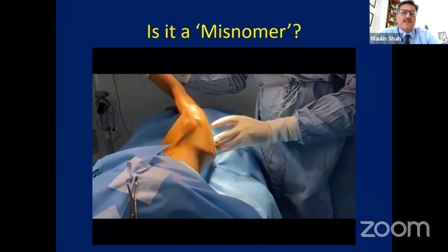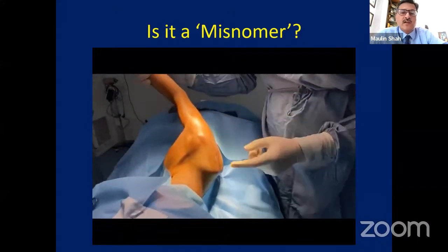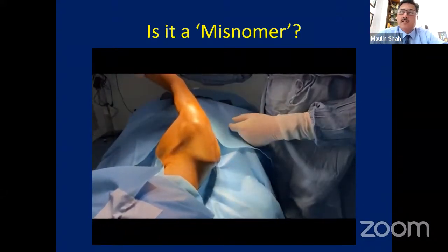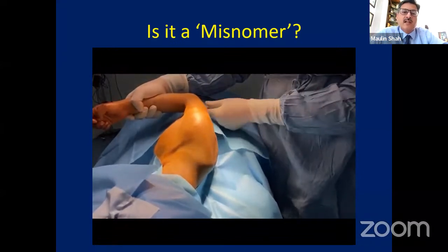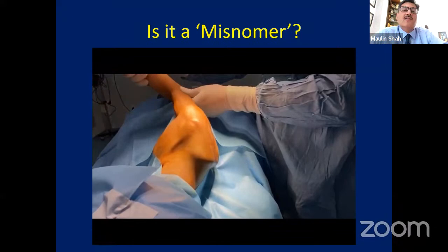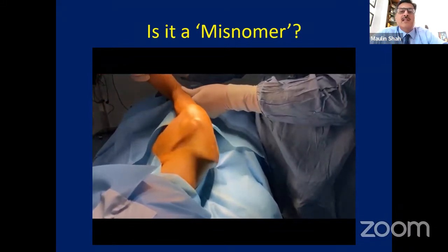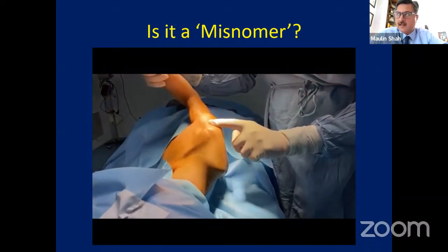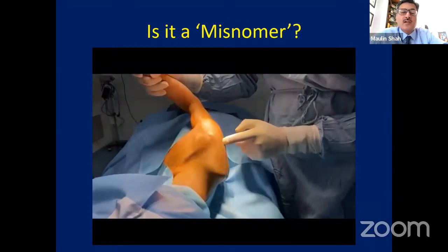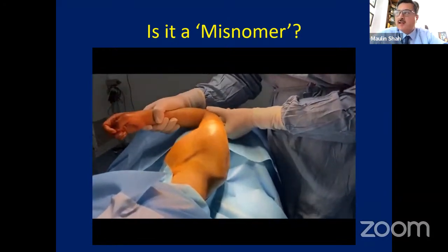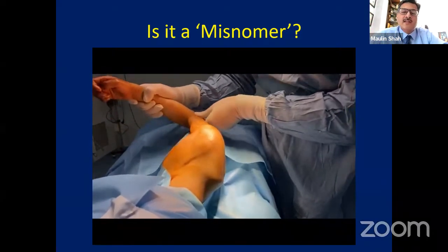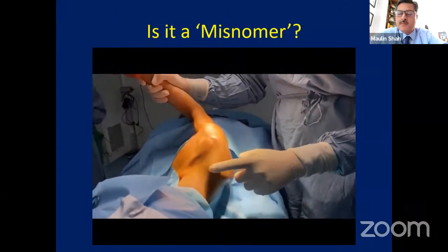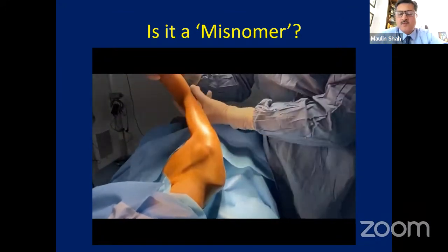This is an intraoperative picture: when we reduce the glenohumeral joint, the scapula becomes prominent. When we keep the arm adducted in internal rotation and the humeral head is dislocated, the scapula sits down. The moment you reduce it, the superoposterior dislocated humeral head reduces to the antero-inferior joint, stretching the antero-inferior capsule. So this is not just abductor tightness or atrophy, but probably the capsule is also responsible for capsular contracture.